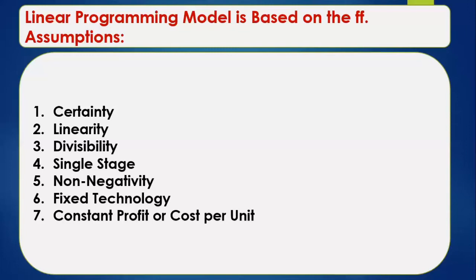This can be best understood by means of an example. There are cases where a company decides to either stop or continue production. If the company decides to stop production, then the quantity of products produced is technically equal to zero. On the other hand, if the company decides to manufacture any amount, then the quantity produced will be greater than zero.